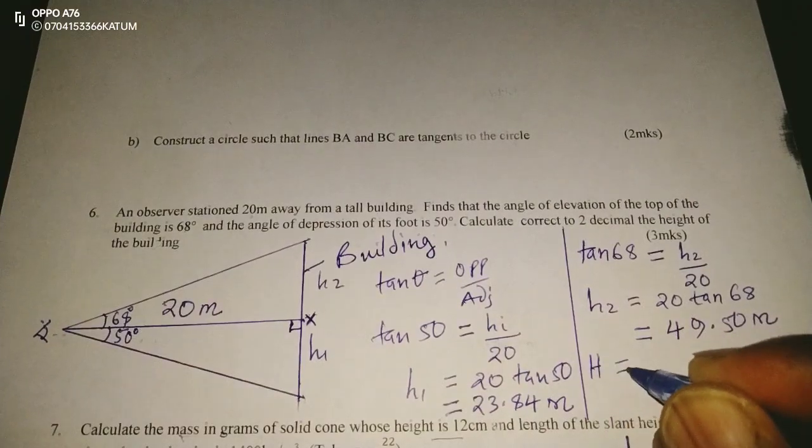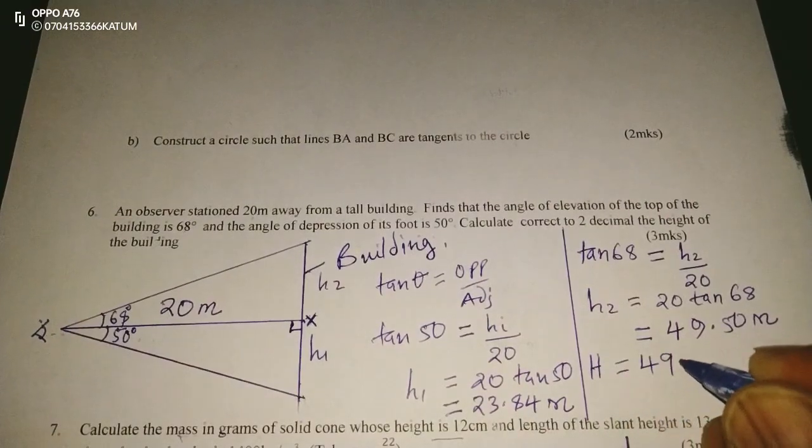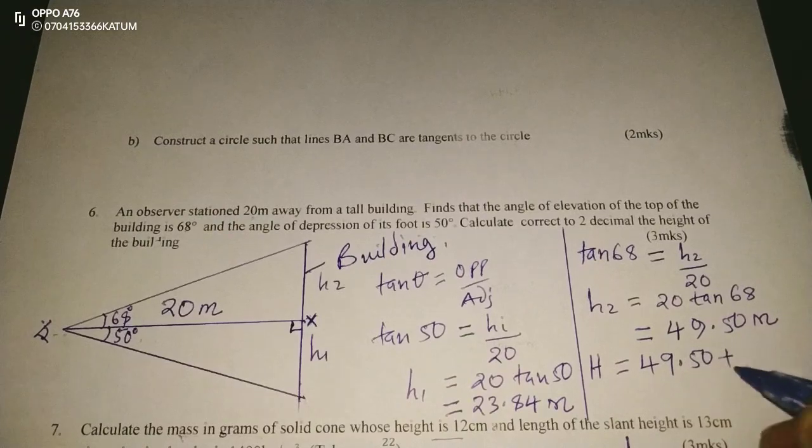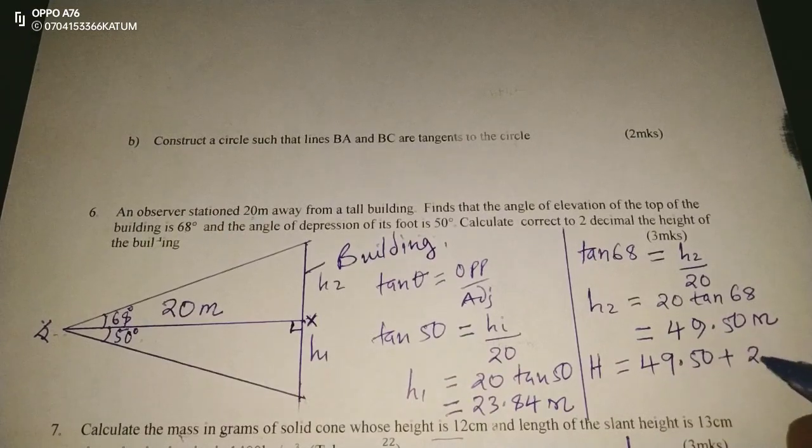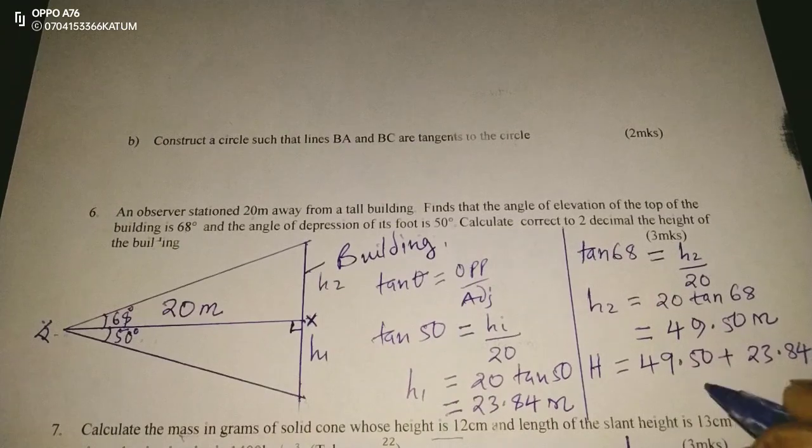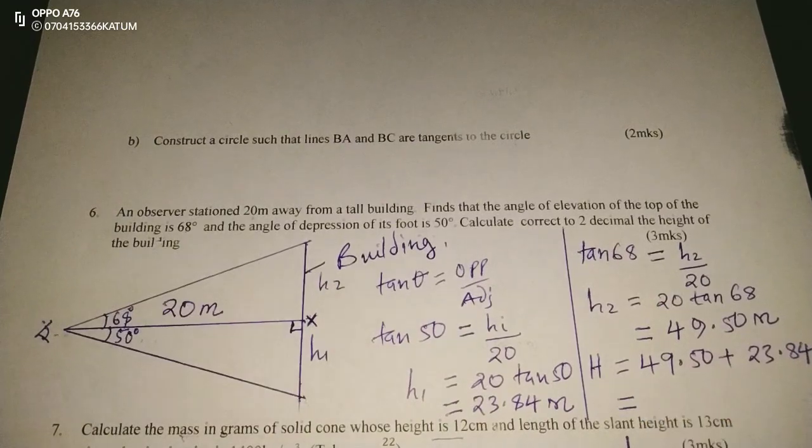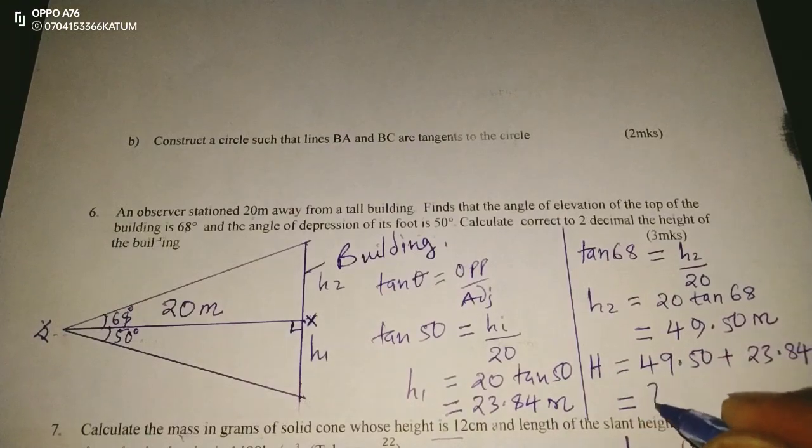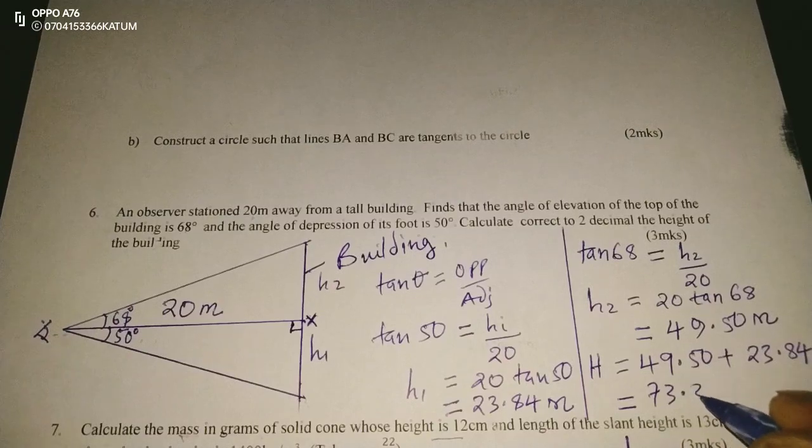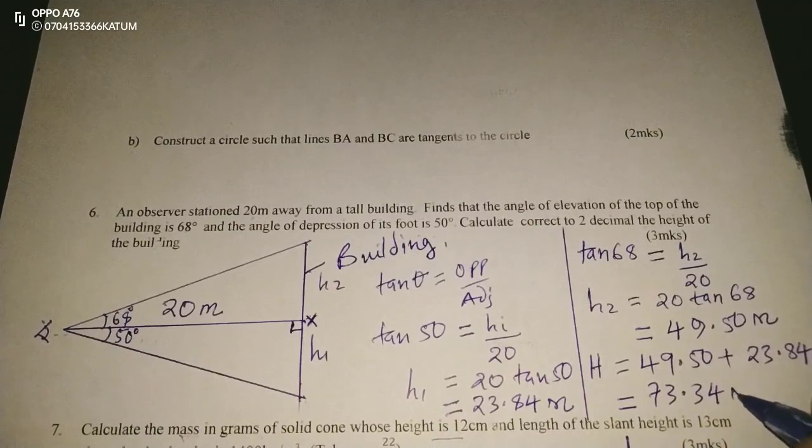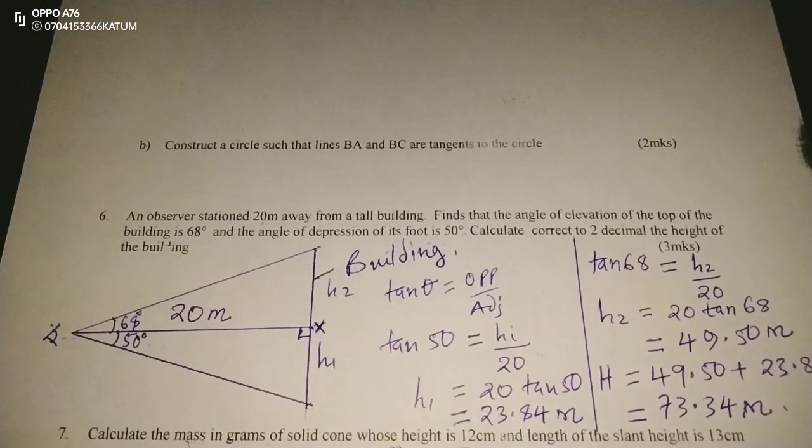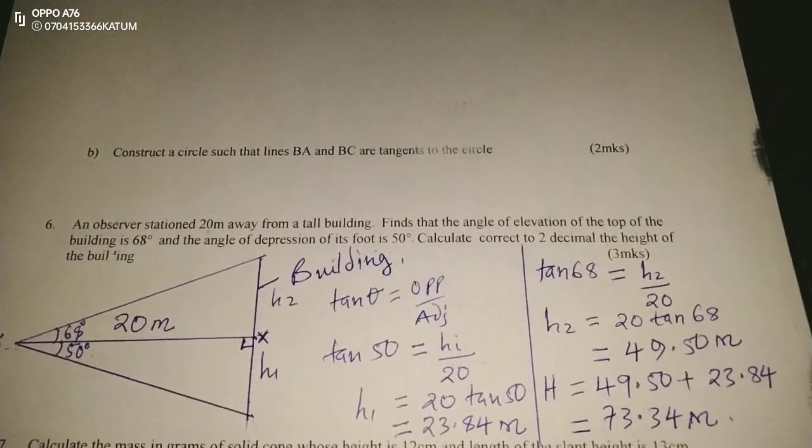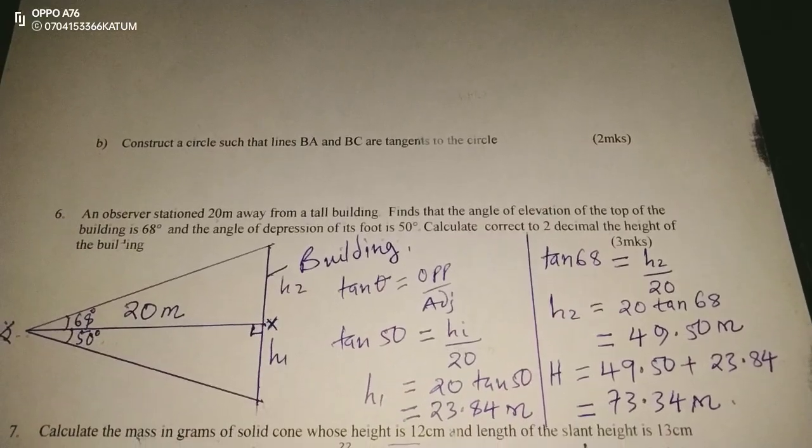The total height of the building now will be the sum 49.50 and 23.84. The total height is going to be 73.34 meters. Remember, we've been told to two decimal places. So, that is the height of the building.